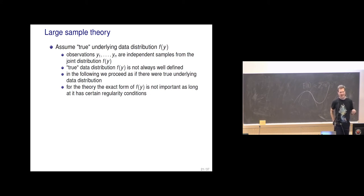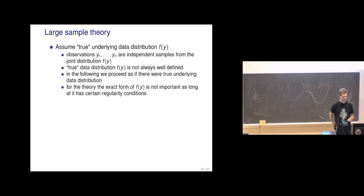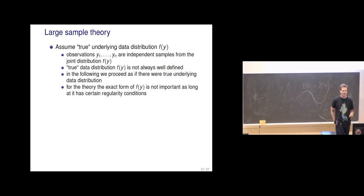Large sample theory assumes there is a true distribution, and asks what happens as we get more and more observations — can we get closer and closer to this truth? Interestingly, for this theory we don't need the exact form of the true distribution, as long as it satisfies certain regularity conditions.